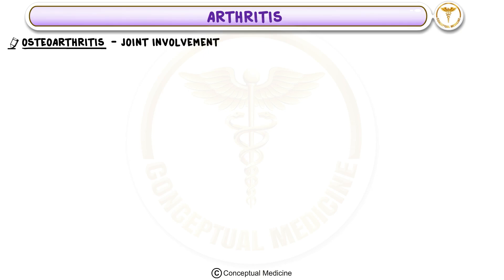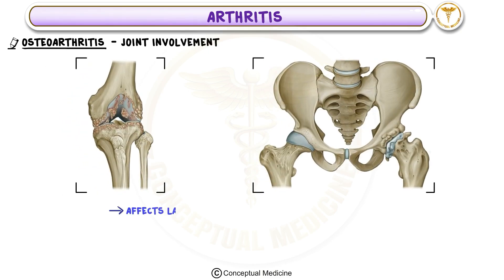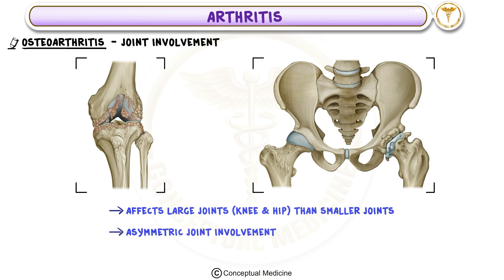Joint Involvement: Osteoarthritis primarily affects large joints like the knee and hip, more than smaller joints. It is a chronic condition that involves asymmetric joint involvement, meaning one side of the joint is often more affected than the other. For example, in the knee, the lateral joint space may be more commonly affected.